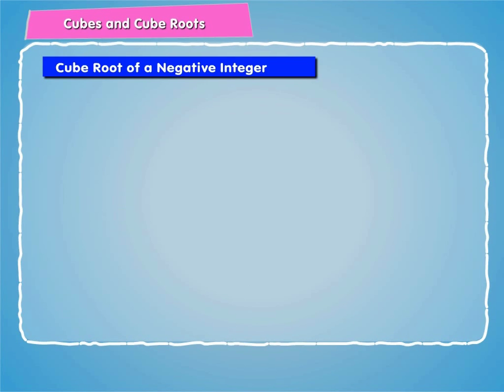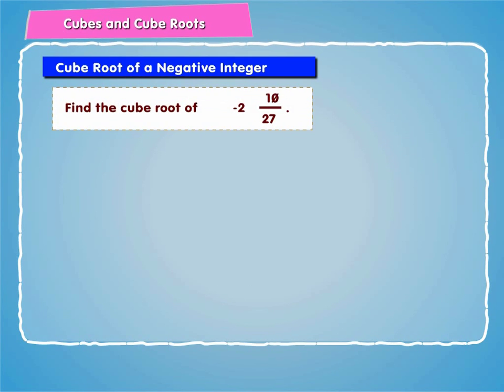Let us now solve another example. Let us find the cube root of minus 2 and 10 by 27. Now, minus 2 and 10 by 27 can be written as minus 64 by 27.